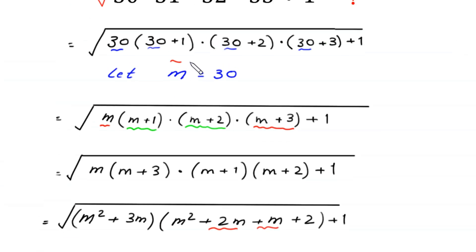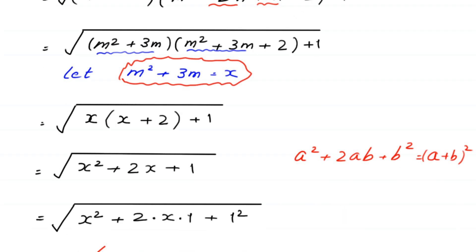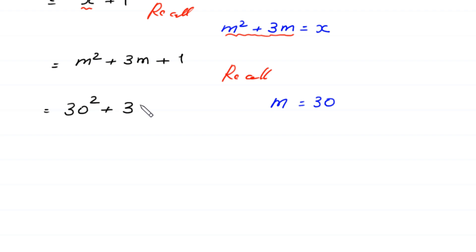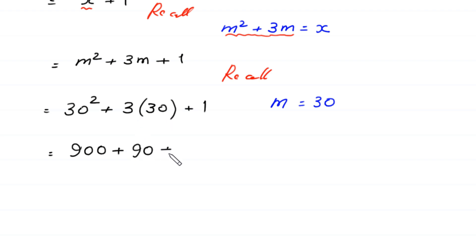Now recall that we supposed m is equal to 30. Substituting 30 in place of every m, this becomes 30 squared plus 3 times 30 plus 1. That is 900 plus 90 plus 1, which equals 991.